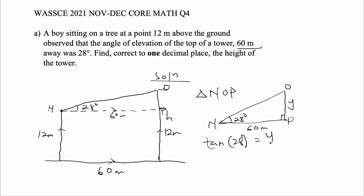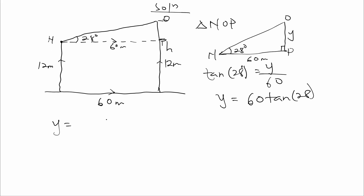So y will be equal to 60 tan 28. 60 tan 28 gives us 31.9026. So the length of line OP is 31.9026. Let's call this side A and this side P.